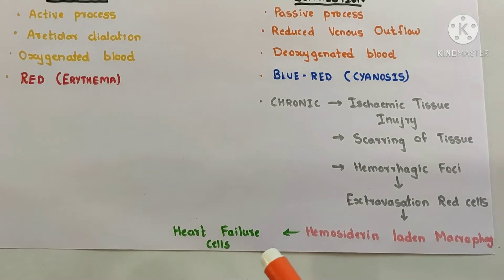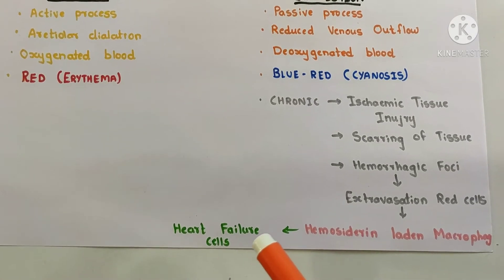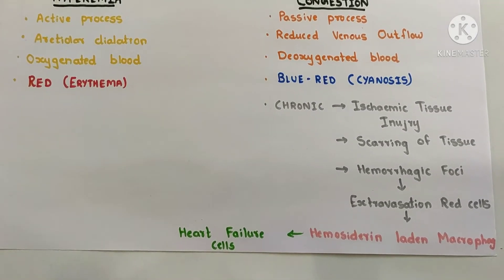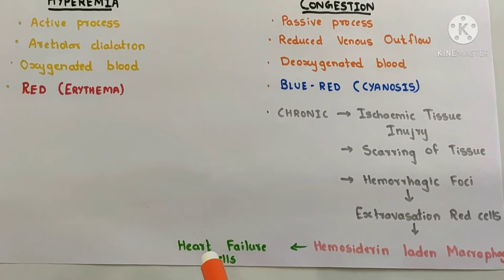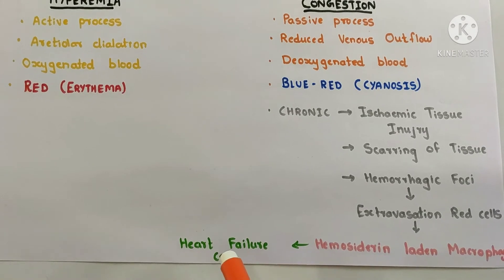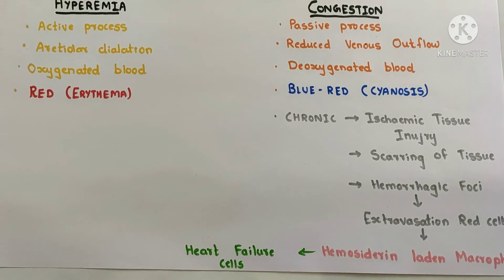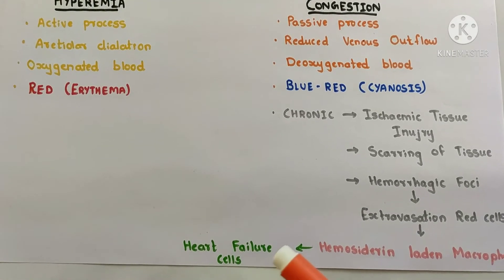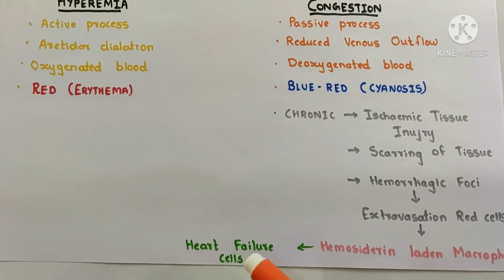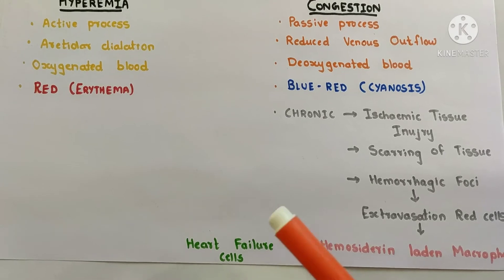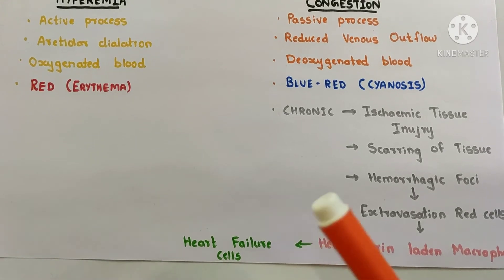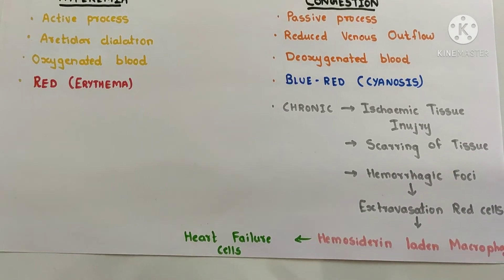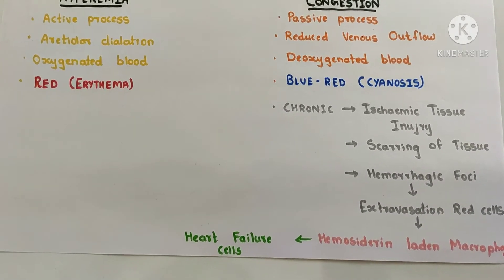These hemosiderin-laden macrophages are also known as heart failure cells. This usually occurs within the lungs, but by the name 'heart failure cells' many times we get confused and think it might be occurring within the heart. But it occurs in chronic pulmonary congestion.